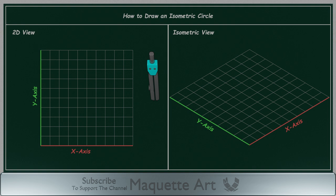Now I will explain how to draw a circle in isometric view. A circle in 2D is just a circle, but in 3D isometric view, the circle looks like an ellipse.